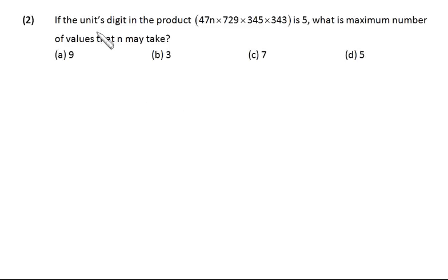In this question, if the units digit in the product 47n × 729 × 345 × 343 is 5, what is maximum number of values that n may take? Here we see all the numbers are odd numbers. So if whatever the number n is, it will definitely produce unit digit 5 if it is an odd number.